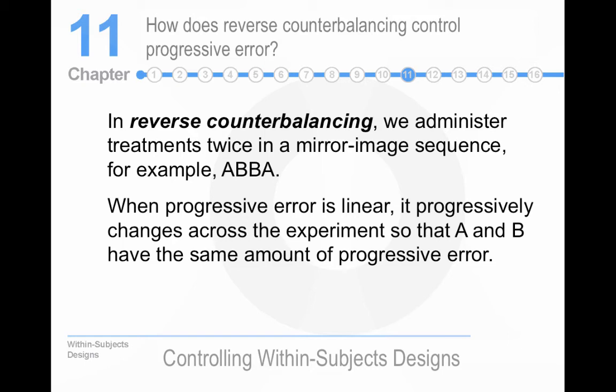Reverse counterbalancing. Let's talk about this. So, if you have two conditions, A and B, you run people in A and then B, and then B again, and then A again. A shout out to the Swedish supergroup ABBA on that one. Here's the idea behind it. The first A has one unit of progressive error. The first B has two units of progressive error. The second B has three units of progressive error. And the second A has four units of progressive error. And so, you're assuming that progressive error is a linear function. You end up with five units of progressive error for condition A and five units for condition B. I've never seen it used.